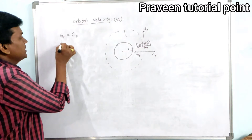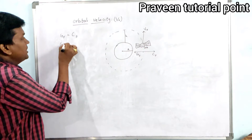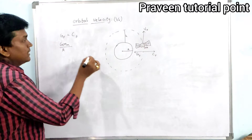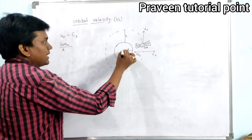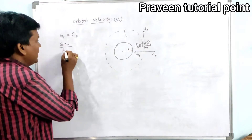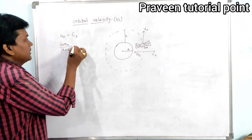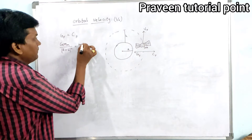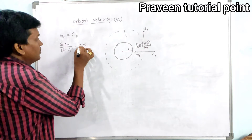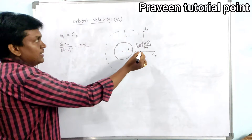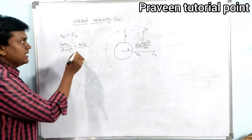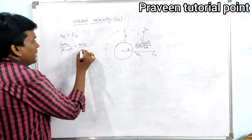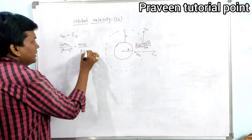If this centrifugal force is equal to the gravitational force, then only the satellite is able to move in its orbit. So let us take GF equal to CF. We know that the gravitational force is GM·m divided by (r+h)², and the centrifugal force is m·V₀² divided by (r+h).